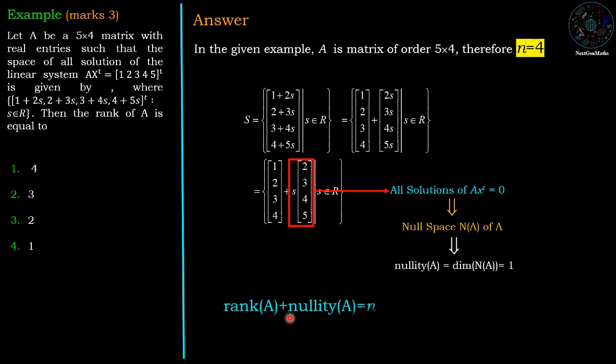By the rank-nullity theorem, rank of A plus nullity of A equals n, therefore rank of A equals n minus nullity of A, where n equals 4 and nullity equals 1. So 4 minus 1 equals 3, so rank of A equals 3, which is option number 2 and is the correct answer.